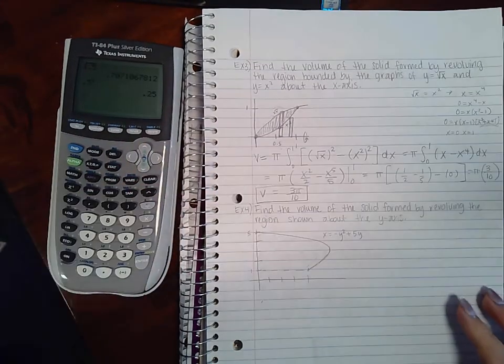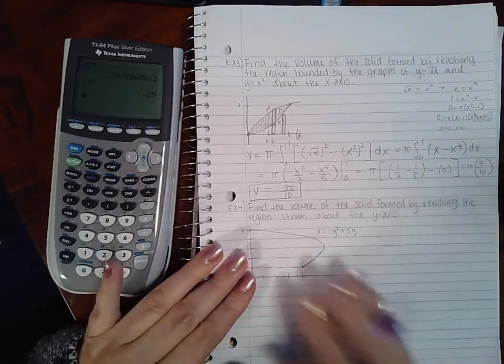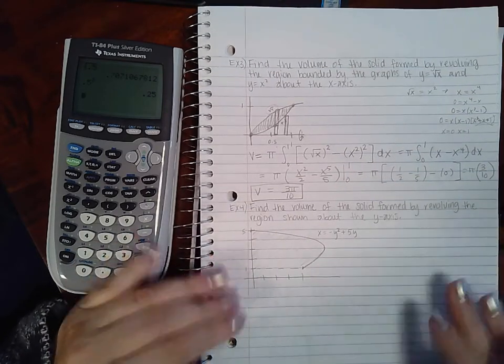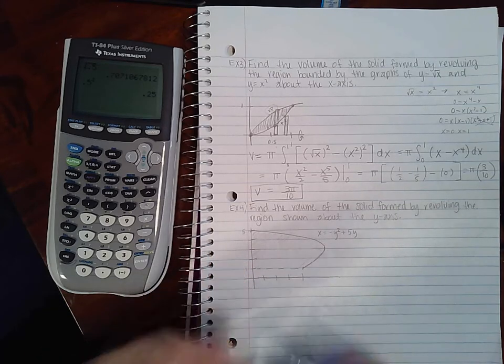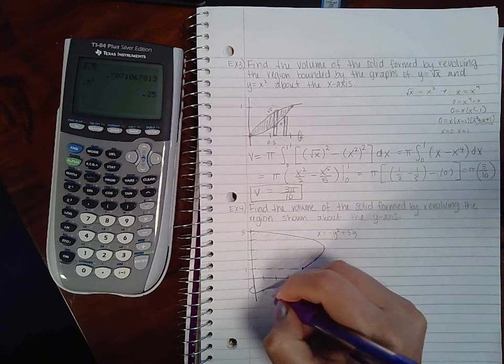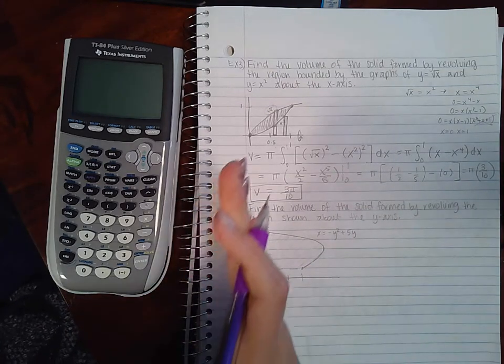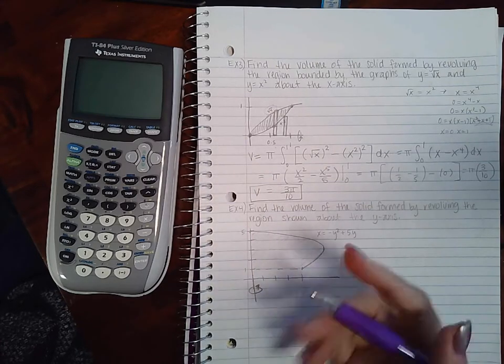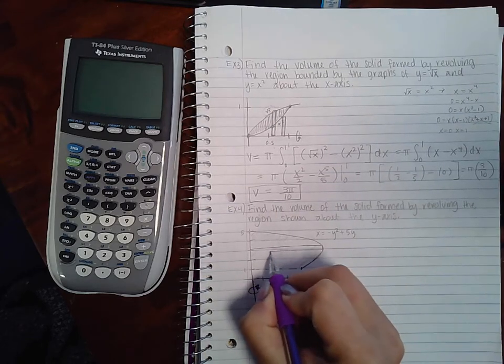Okay, now for example four. This one already has a graph drawn for us. We could have drawn it ourselves if they had given us the information, but instead of giving us the information in words, they gave us an image. It says find the volume of the solid formed by revolving the region shown about the y-axis. So this is the y-axis and this is what we're revolving around. So in this particular case, my line of revolution is vertical, which means that my rectangles actually need to be horizontal.